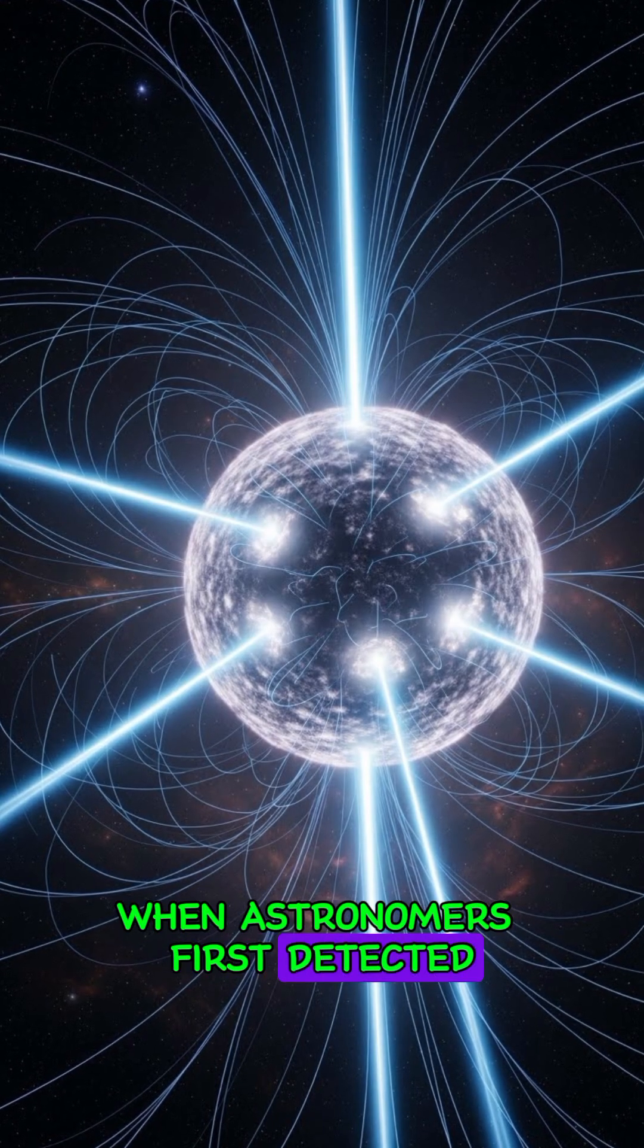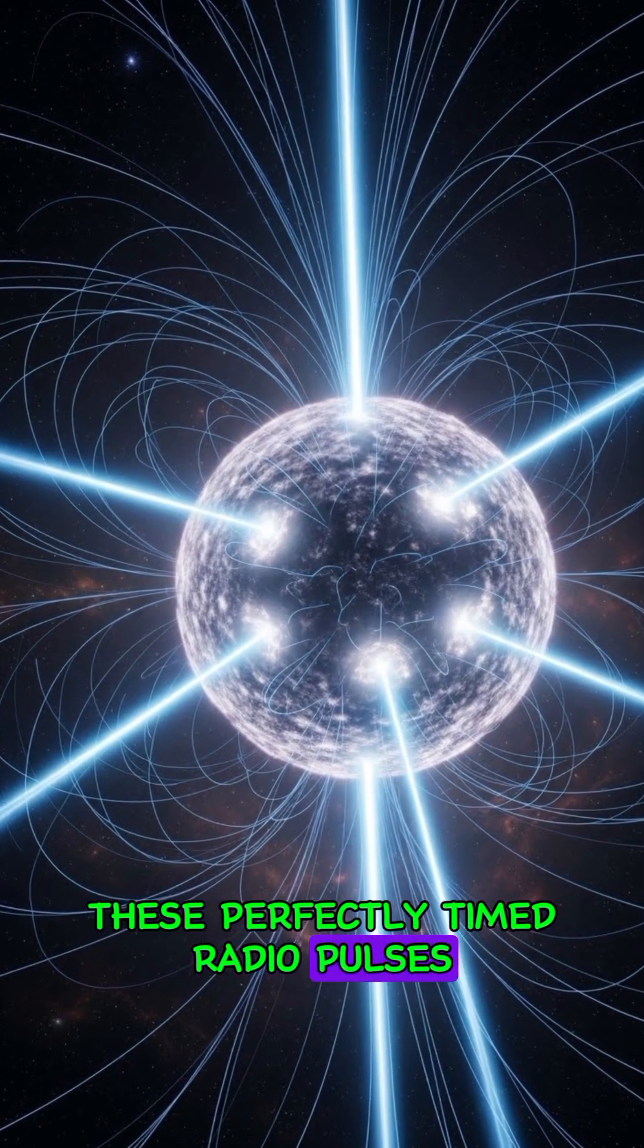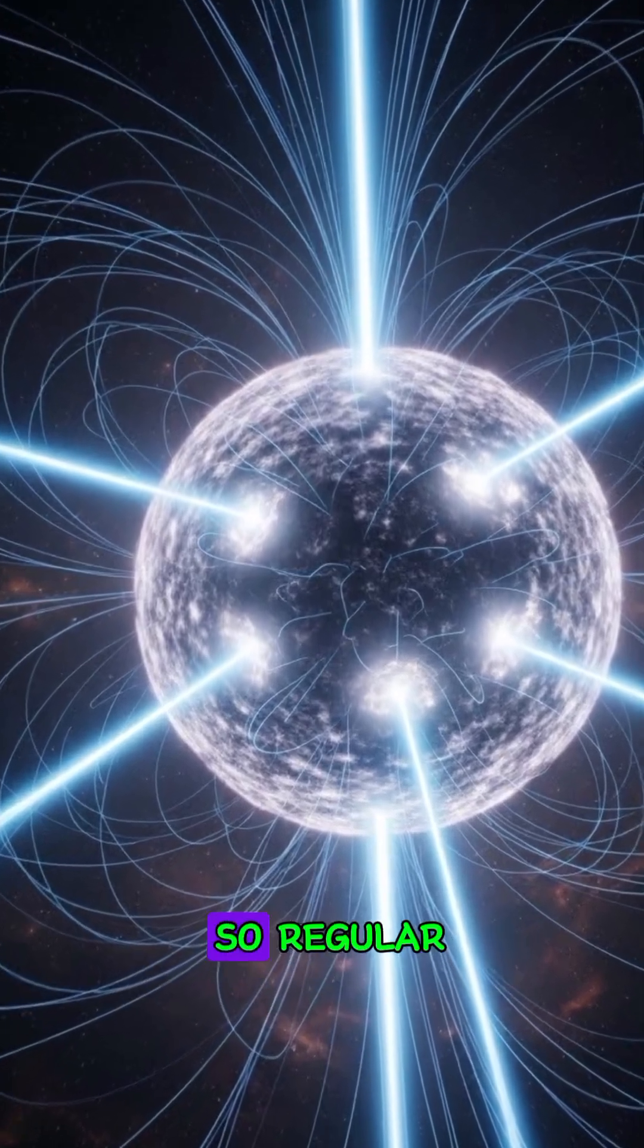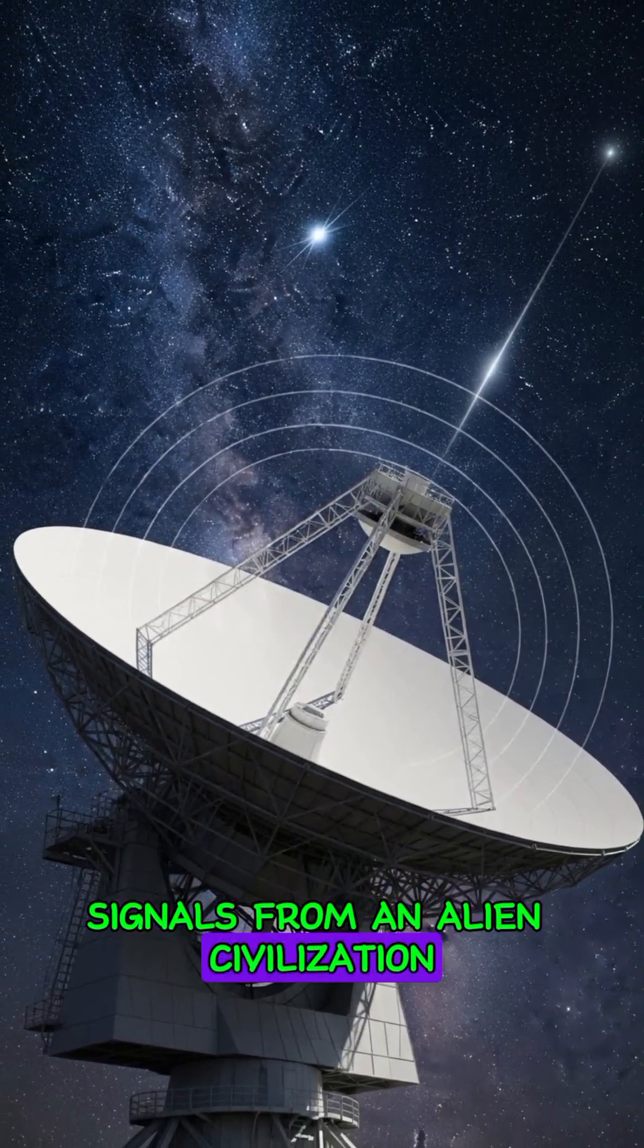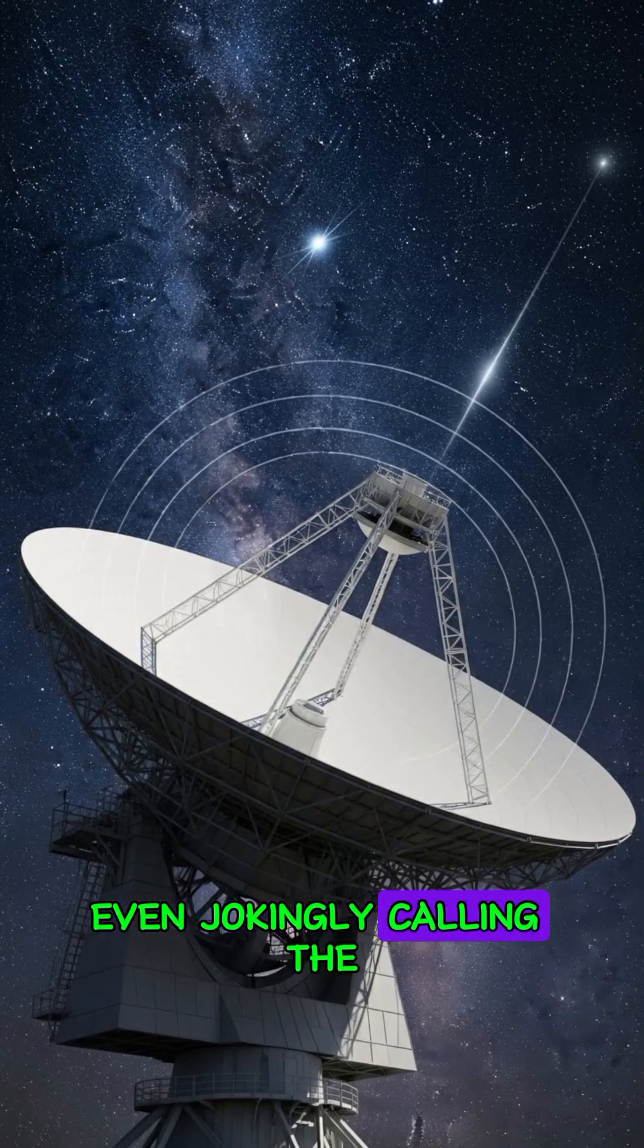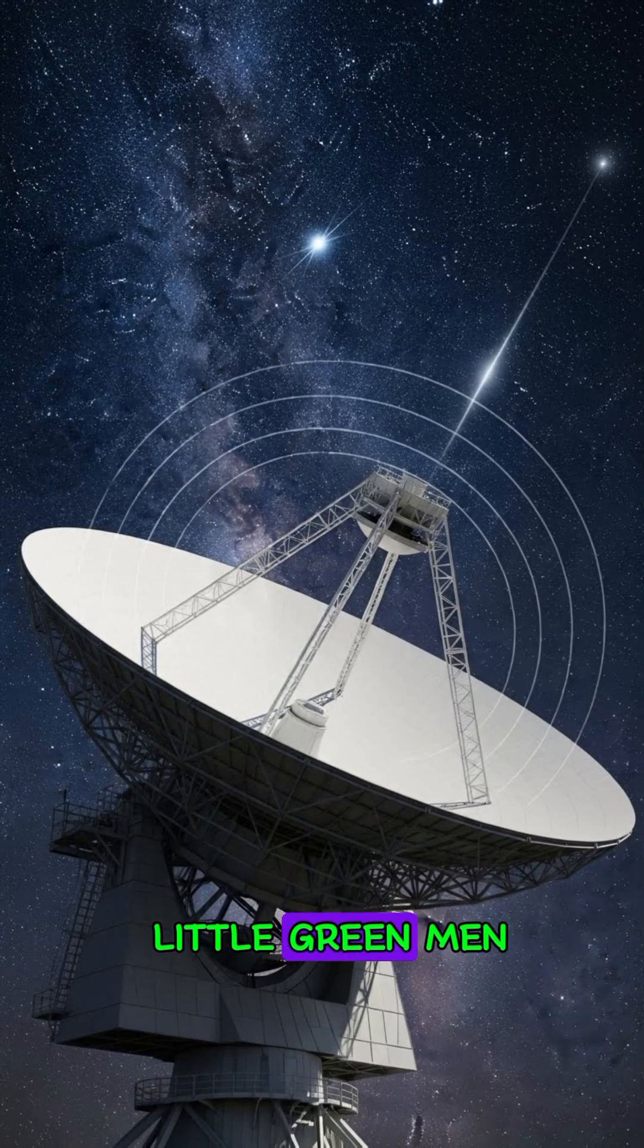When astronomers first detected these perfectly timed radio pulses in 1967, they were so regular that scientists briefly wondered if they discovered signals from an alien civilization, even jokingly calling the first one LGM-1 for little green men.